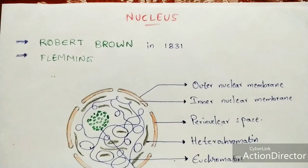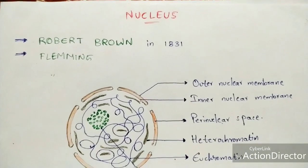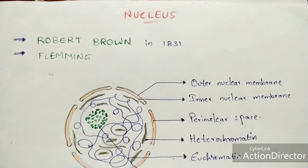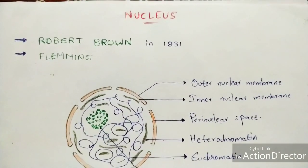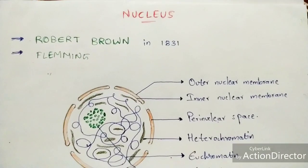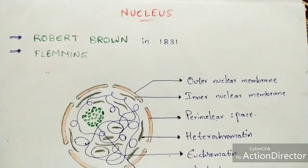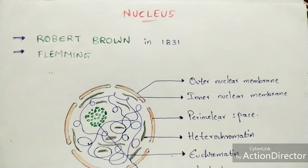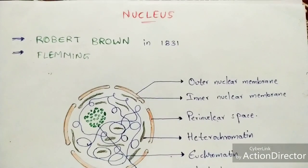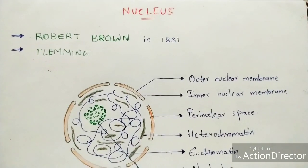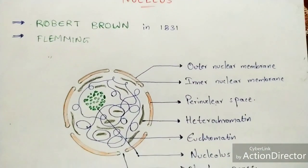In this video, let us discuss about the nucleus. The nucleus was first discovered by Robert Brown in 1831. Later, further investigation was done by Fleming, who discovered the inner structures and inner parts of the nucleus.